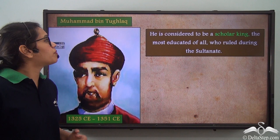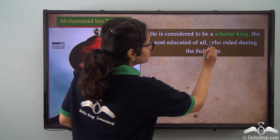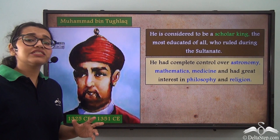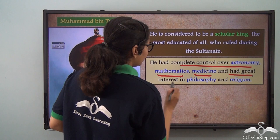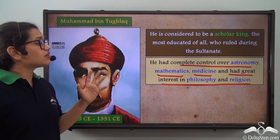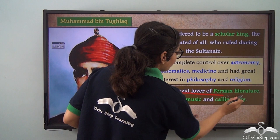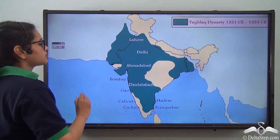After the death of Giyasuddin Tughlaq, his son Muhammad bin Tughlaq came to power. He is considered to be a scholar king — the most educated one amongst all. He had complete control over astronomy, mathematics, and medicine, and had great interest in philosophy as well as religion. He was also an avid lover of Persian literature, fine arts, music, and calligraphy.